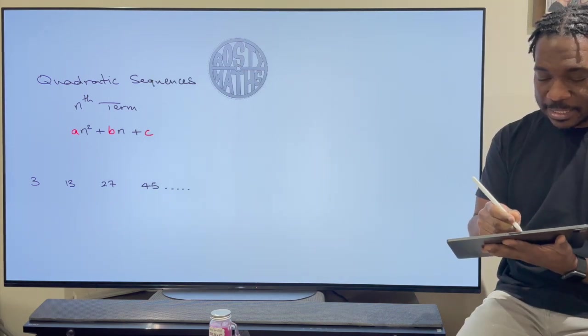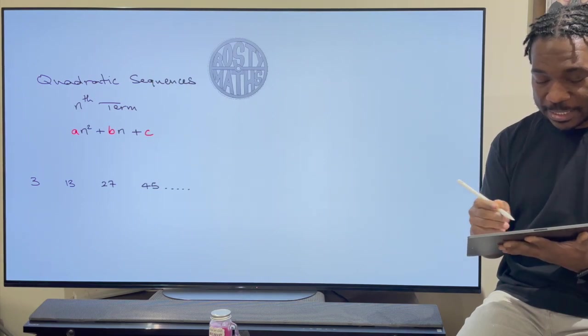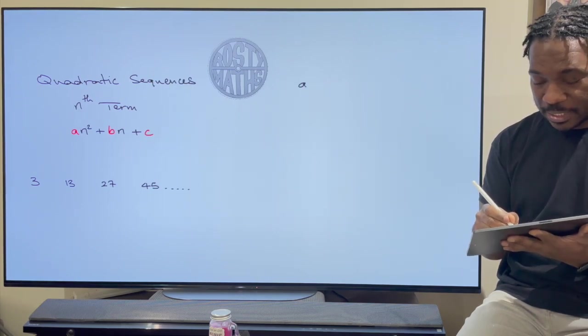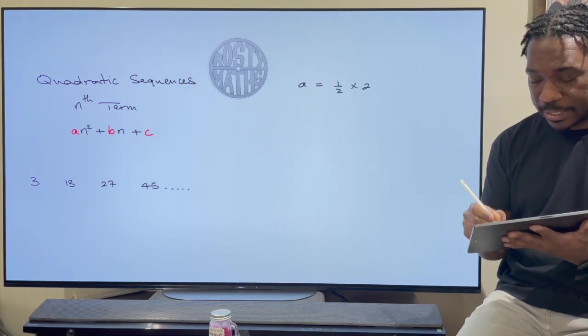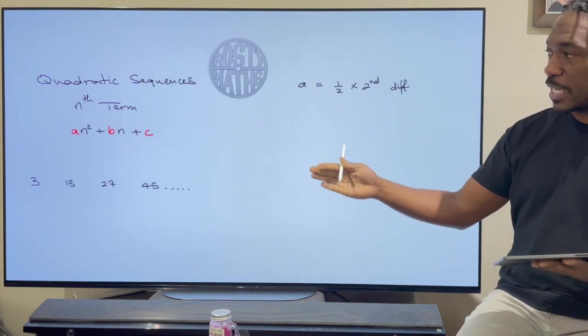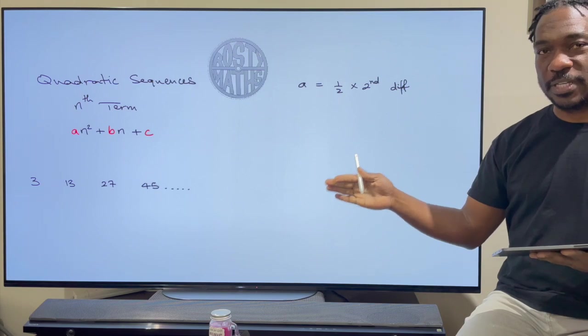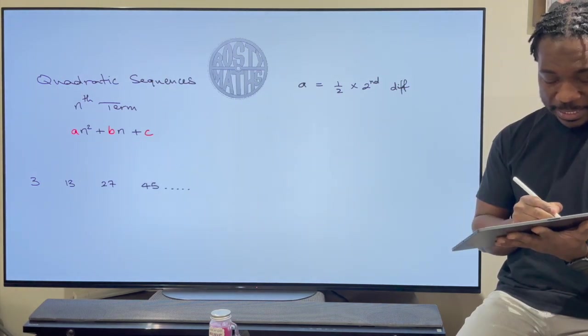There's one thing that stays the same regardless of which method you use and that is that a is half of the second difference. So what you need to do is find a second difference and you find half of it and then you get your a. So let's go ahead now and find that second difference.